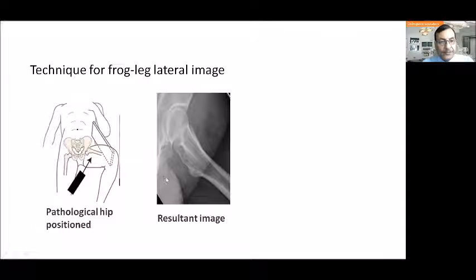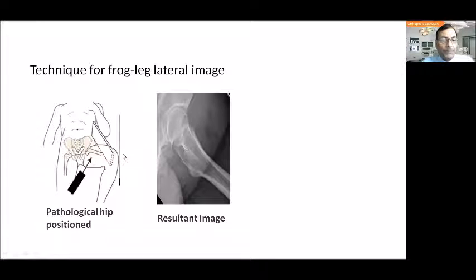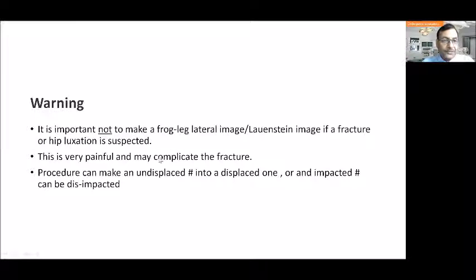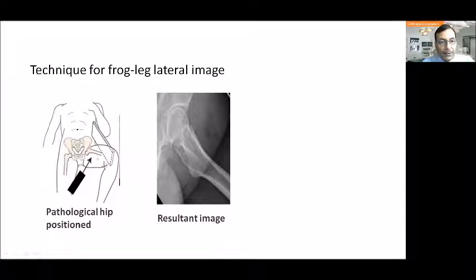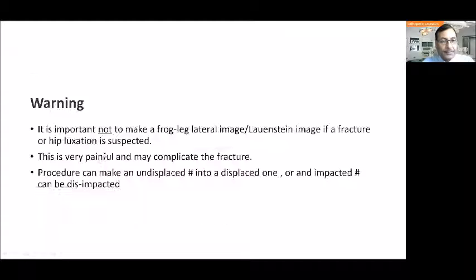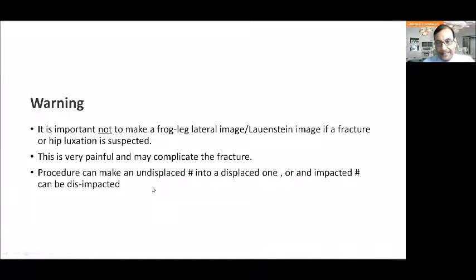The frog leg lateral is the contrary — the pathological hip is positioned in flexion and abduction. The problem with this view is that we are moving the fractured hip, which can cause disturbance. An undisplaced fracture may become displaced, and an impacted fracture can become disimpacted, creating problems for treatment.